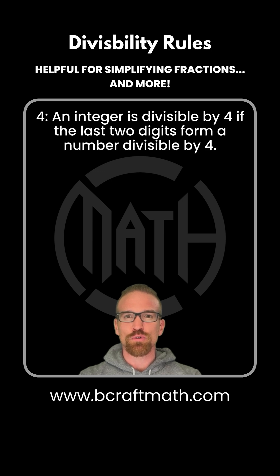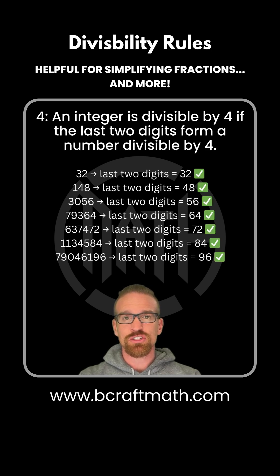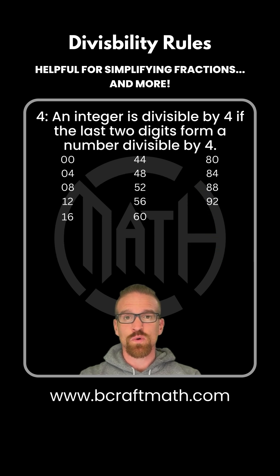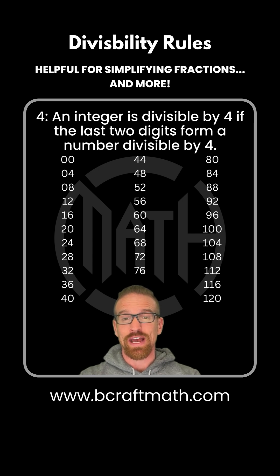Now let's talk about the divisibility rule for four. All you have to do is look at your last two digits — the tens digit and the ones digit. If that two-digit number is divisible by four, then the entire number is divisible by four. The reason why is that four, eight, twelve, sixteen, twenty — and if we go all the way up to 100, it repeats. It's all about those last two digits. I don't care what comes before that. If those last two digits form a number divisible by four, the entire number is divisible by four.